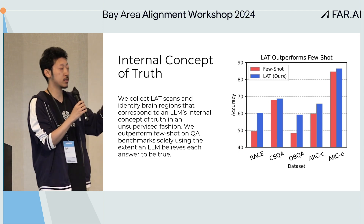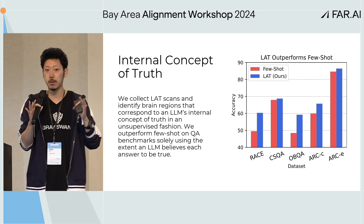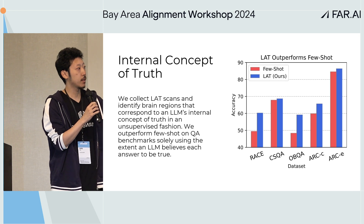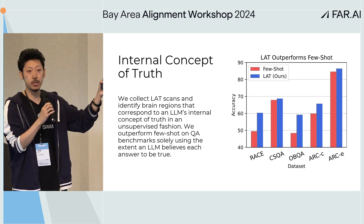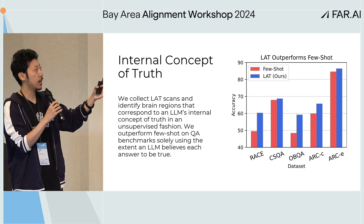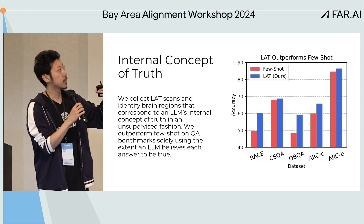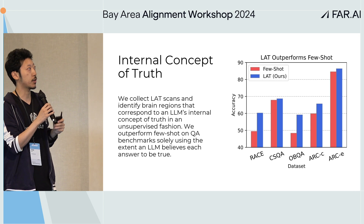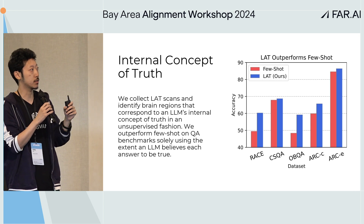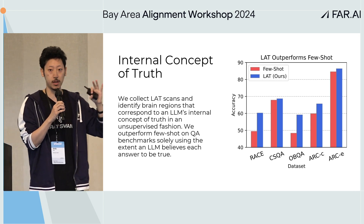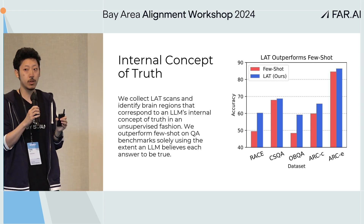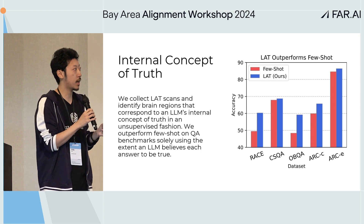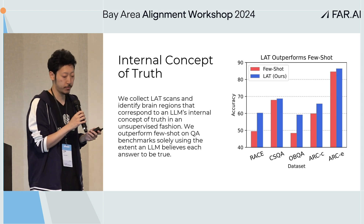Just using this measure — without looking at model outputs — you can perform multiple-choice questions and question answering, and the accuracy is actually very high, in many cases higher than few-shot prompting. This means there is some internal measure that tracks whether the model thinks something is truthful.